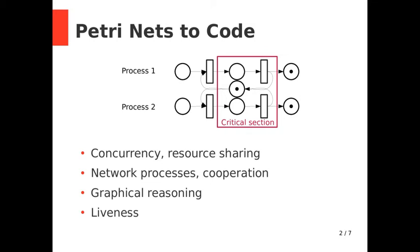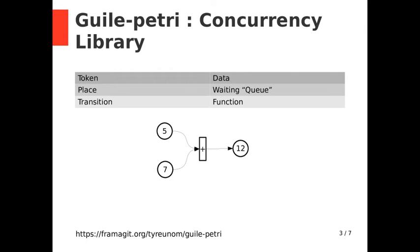Petri Nets are useful for concurrency, resource sharing, and they can represent network processes and cooperation. They offer nice graphical reasoning, and the liveness analysis on Petri Nets is decidable.